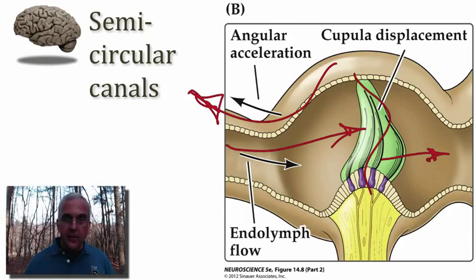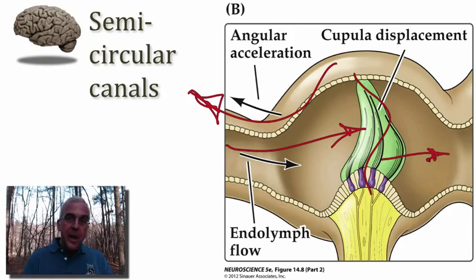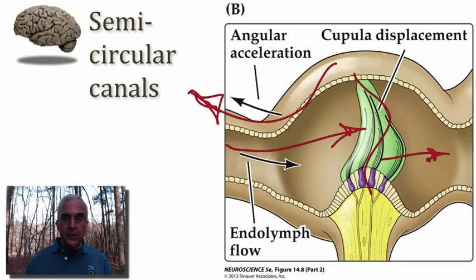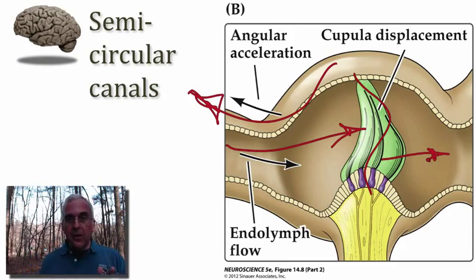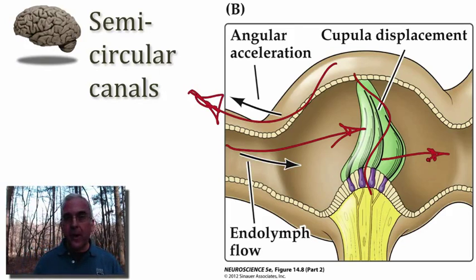When we turn our head to activate a particular ampulla of a semicircular canal, it has a functional pair on the opposite side of the head. Turning the head in one direction activates the crista on the side of the turn, while deactivating or hyperpolarizing the hair cells on the opposite side of the head in the corresponding member of the pair.